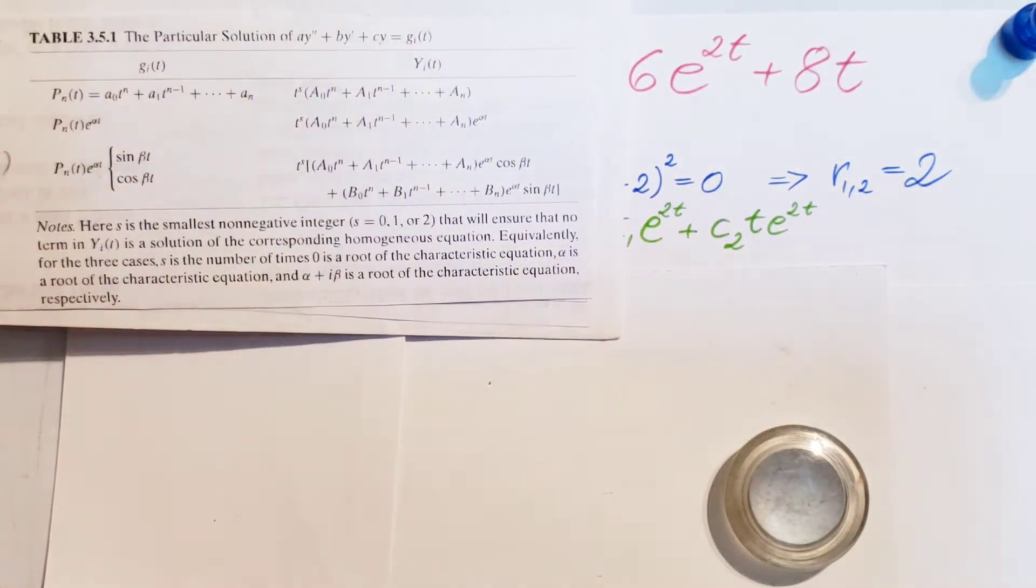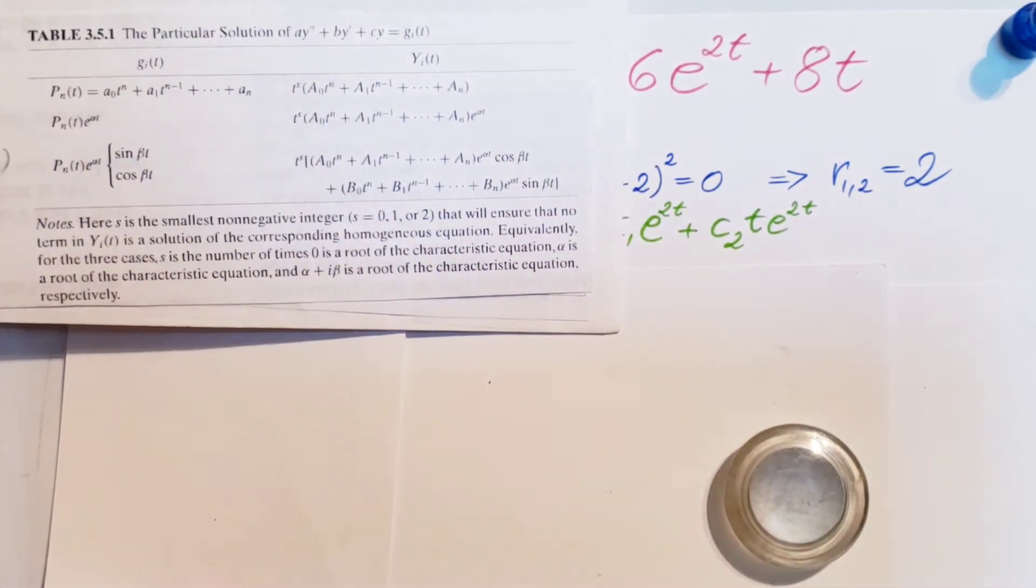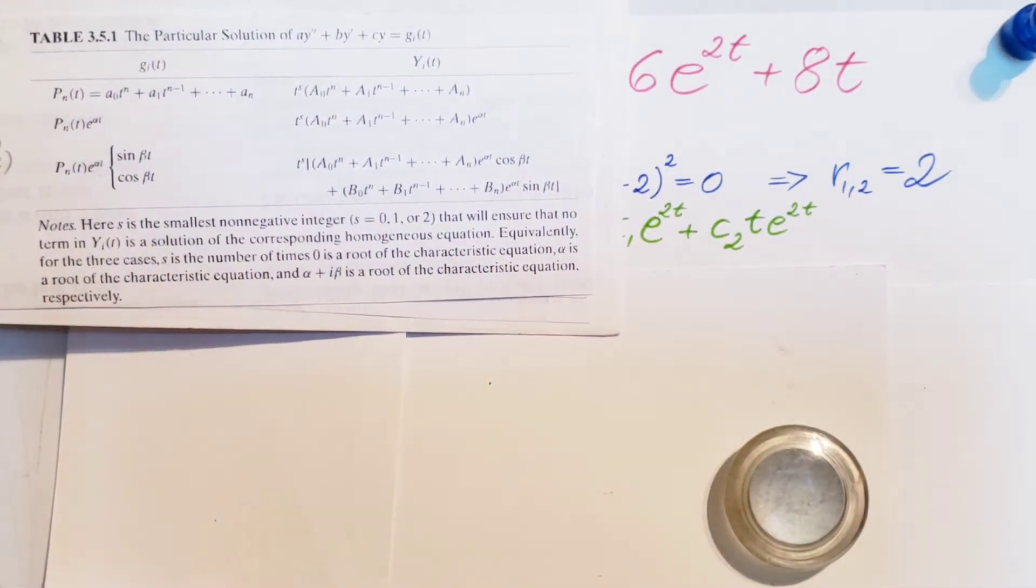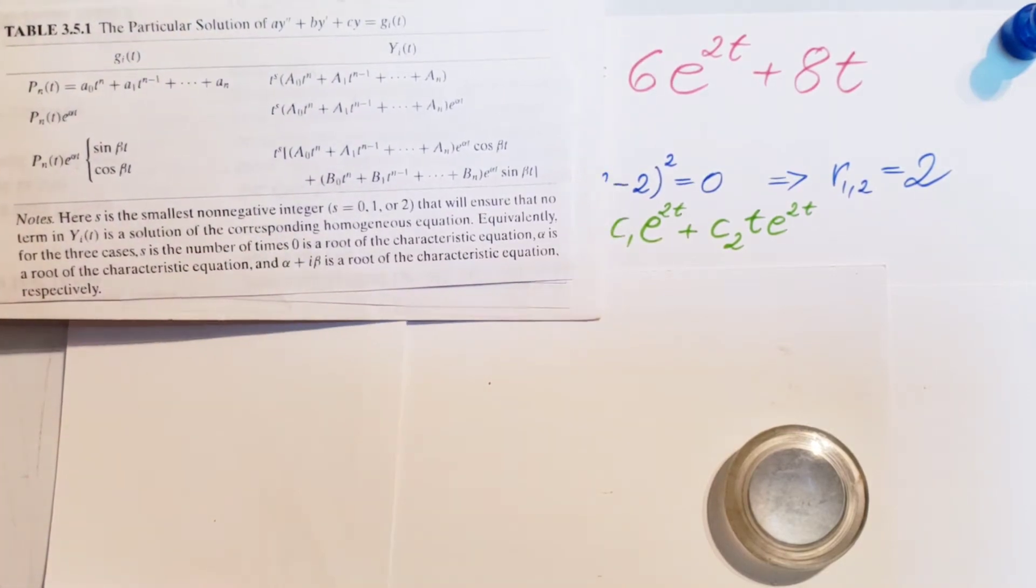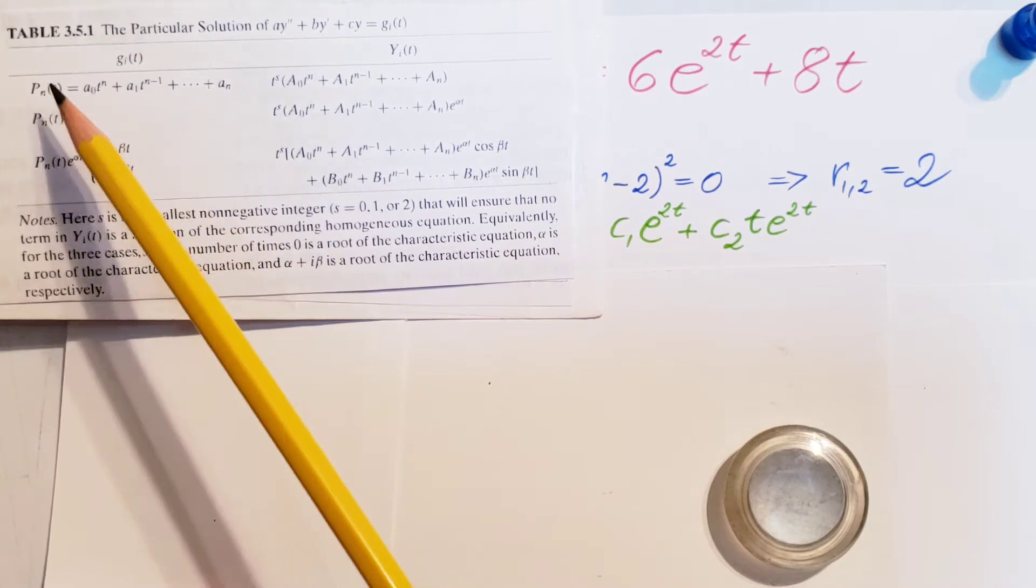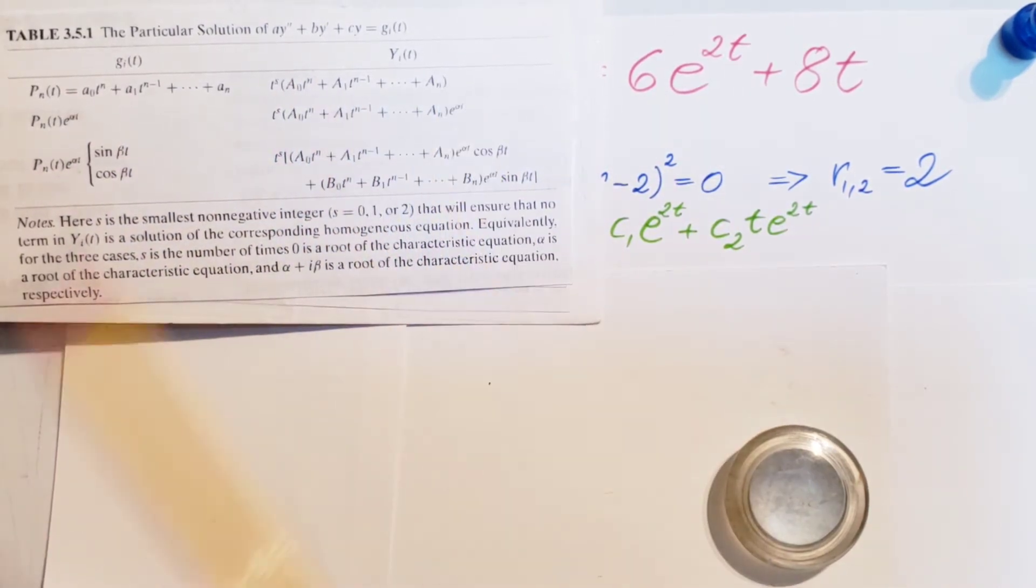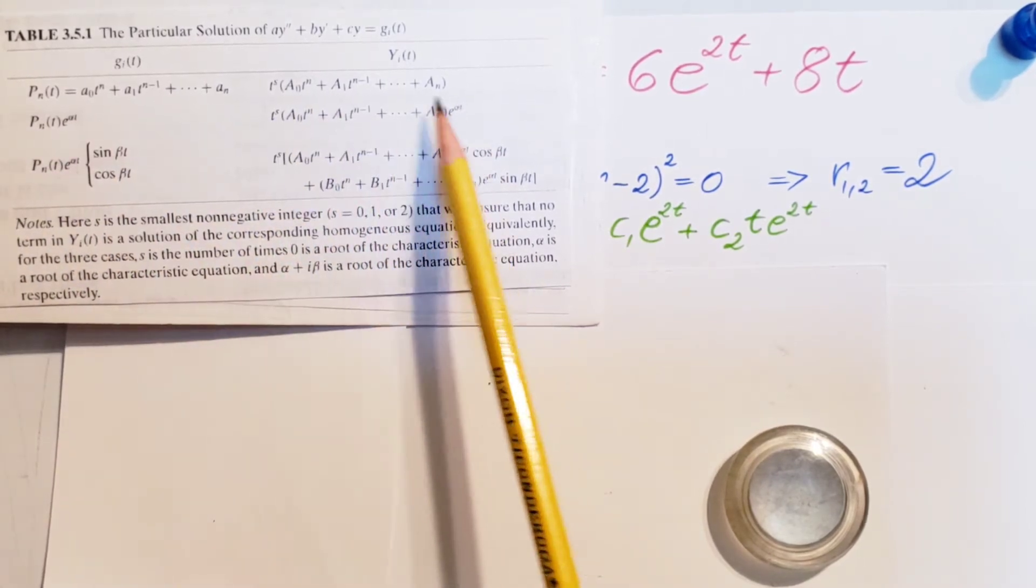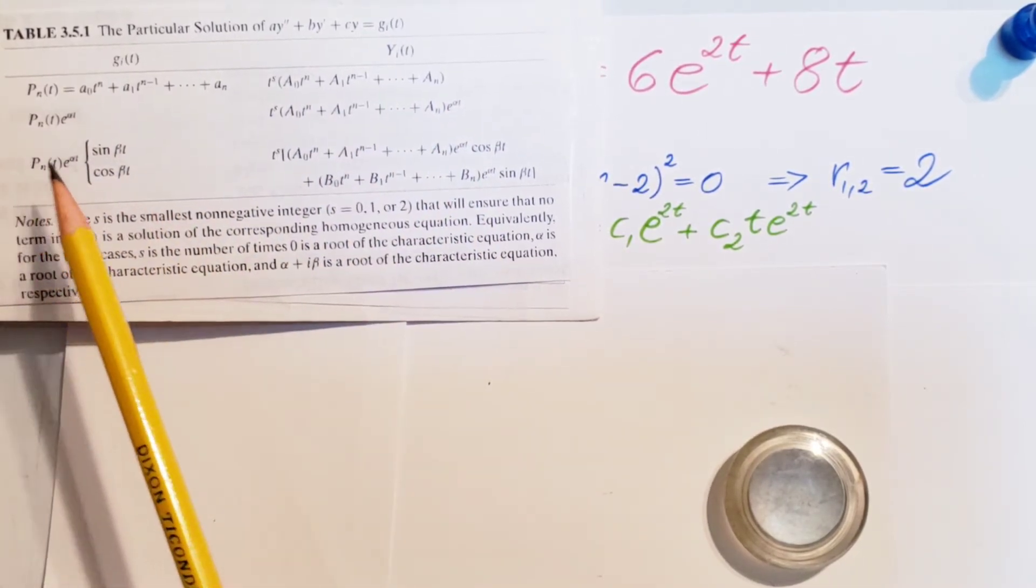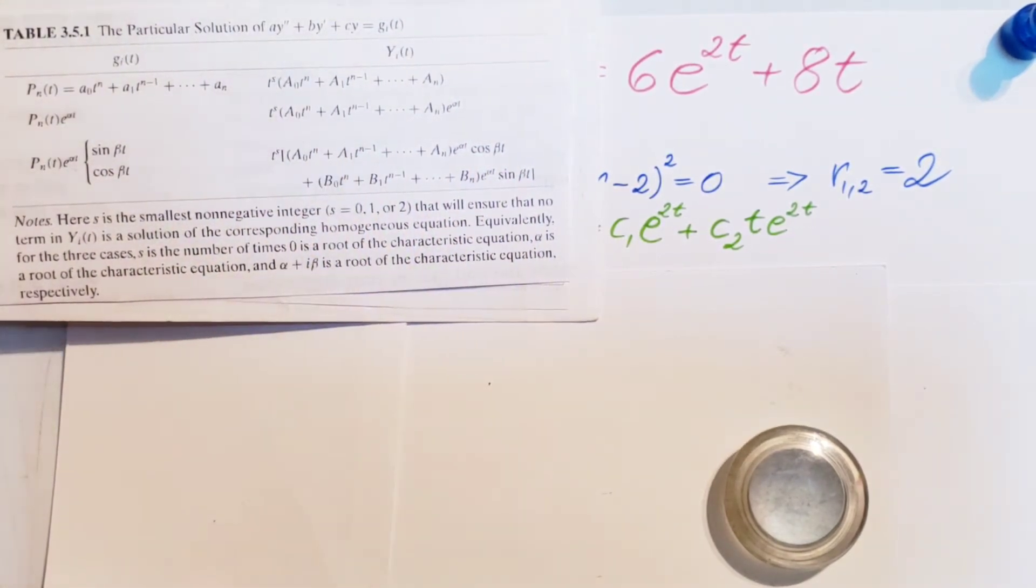Most textbooks will give you a nice table or formulas where they will guide you what you have to guess in order to continue with this method. Here, you can see if we have a polynomial on this side, we need to guess this. If we have polynomial mixed with exponential, then we work with this one. If we have polynomial, exponential, and sinusoid mixed, then we guess this one.